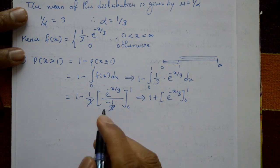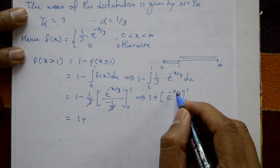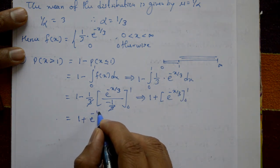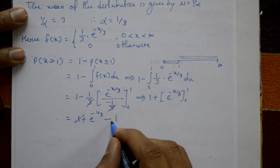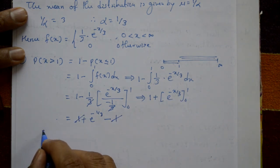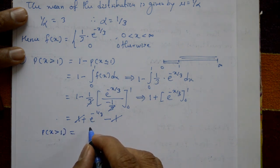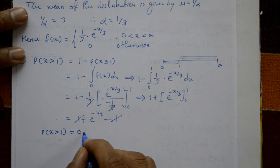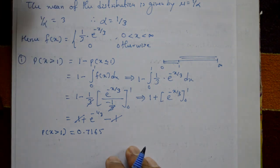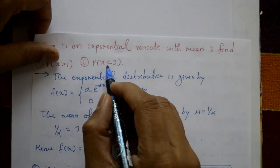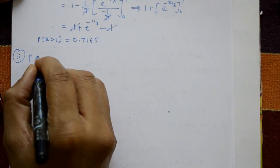Evaluating the limits: put x = 1 to get e^(−1/3), and the lower limit gives e^0 = 1. The −1 and +1 cancel, so the probability of X greater than 1 equals e^(−1/3) ≈ 0.7165.